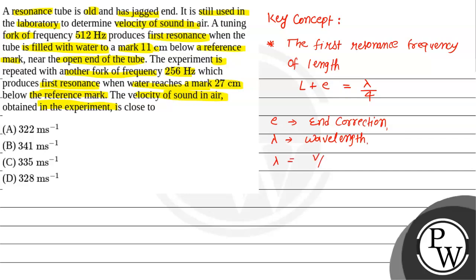v divided by frequency, where v is the velocity and f is the frequency. And L is basically that length of water filled in a tube.